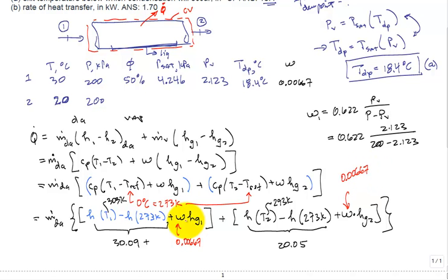What about H of G? Well, that's the saturated vapor enthalpy at 30 degrees C that comes in at 2556.3, and H of G at 20 degrees C comes in at 2538.1 degrees C.